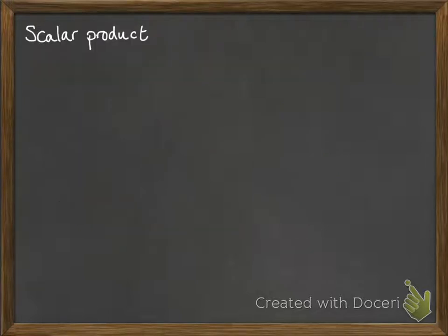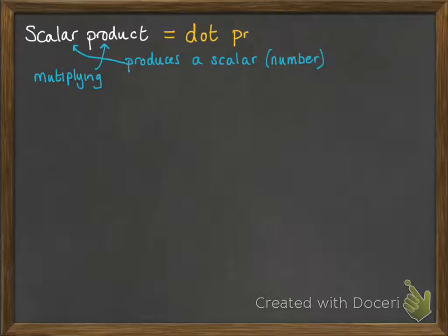So now we can have a look at the scalar product. Now have a think about those words that are being used, that gives a clue as to what we're going to do. So product meaning that we're multiplying. Scalar means that it produces a scalar, which is just a number. This is also called the dot product, because we write it as a dot there in the middle, so A dot B.